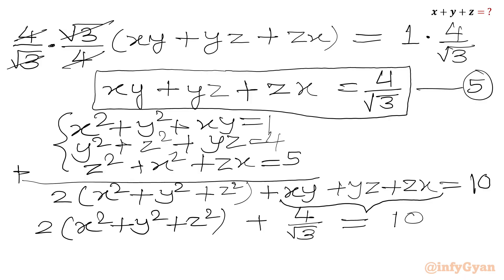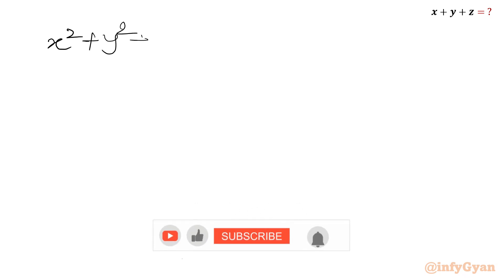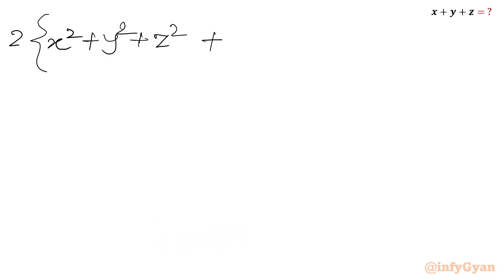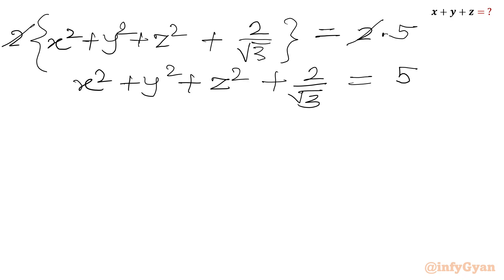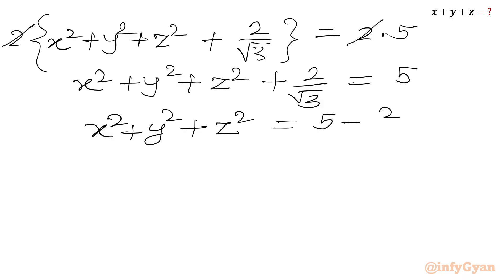Taking 2 common from the left-hand side: 2·(x² + y² + z² + 2/√3) = 2·5. Cancelling 2 from both sides gives x² + y² + z² + 2/√3 = 5. Subtracting 2/√3 from both sides: x² + y² + z² = 5 − 2/√3.